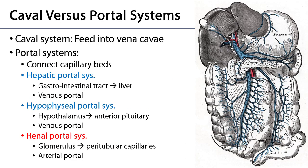There are two specifically venous systems discussed in both systems-based and gross anatomy. The first is the caval system — straightforward: any blood from the systemic loop is returned to the right atrium through either the superior or inferior vena cavae. Then there are portal systems.